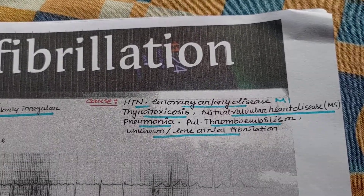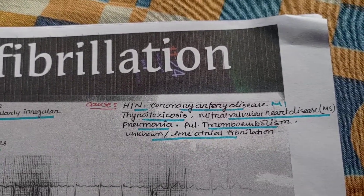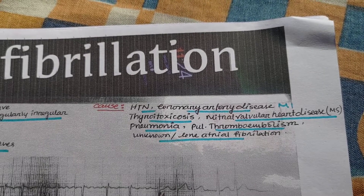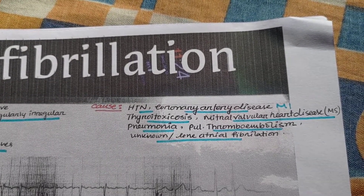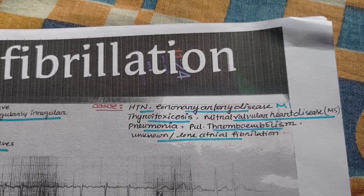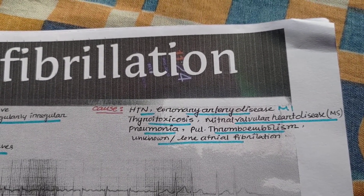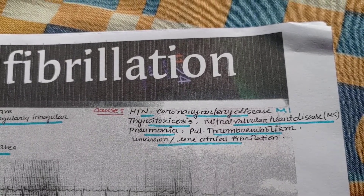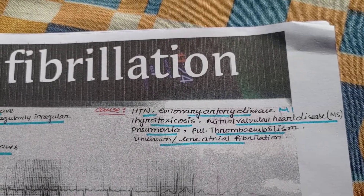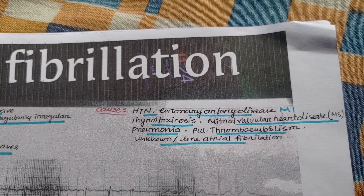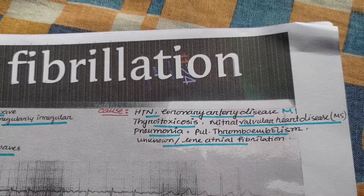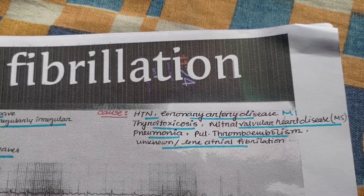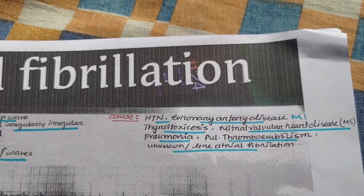What are the causes of atrial fibrillation? First of all: systemic hypertension, then coronary artery disease, then thyroid toxicosis, then mitral valvular disease, then mitral stenosis, then pneumonia, pulmonary thromboembolism, then unknown — lone atrial fibrillation.